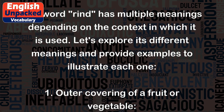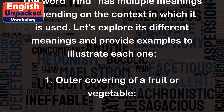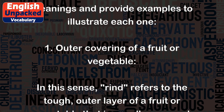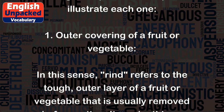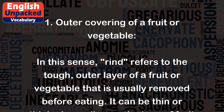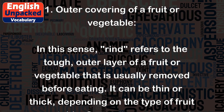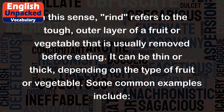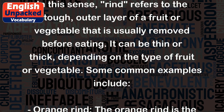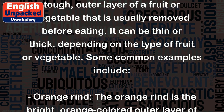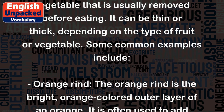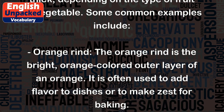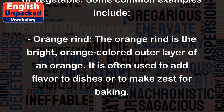1. Outer covering of a fruit or vegetable. In this sense, rind refers to the tough outer layer of a fruit or vegetable that is usually removed before eating. It can be thin or thick, depending on the type of fruit or vegetable. One common example is orange rind — the bright, orange-colored outer layer of an orange, often used to add flavor to dishes or to make zest for baking.